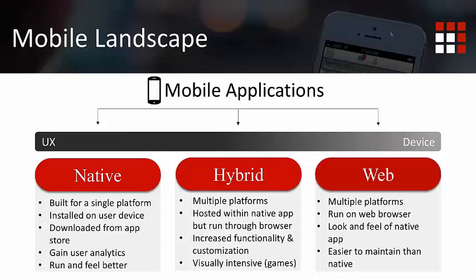To get the best of both worlds — the best possible user experience and cross-platform appeal so that your investments are controlled — you can build hybrid applications. Hybrid frameworks like PhoneGap, Xamarin, Sencha Touch, and Titanium allow you to build once and deploy to multiple platforms, giving users the best of both worlds. That covers the different types of applications for business users who may not be familiar with what exists.